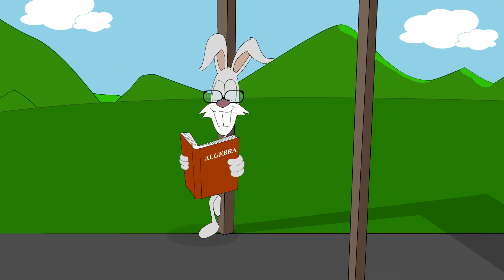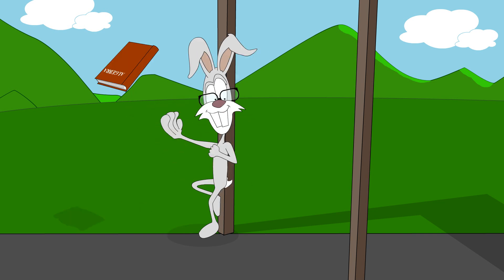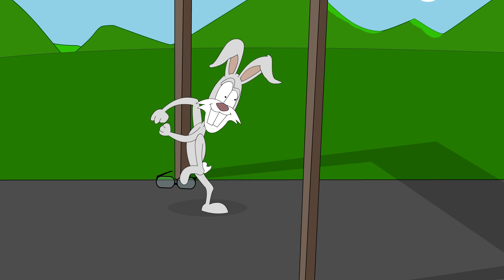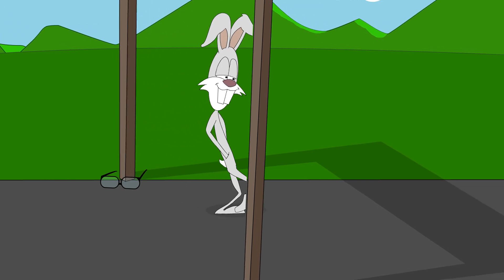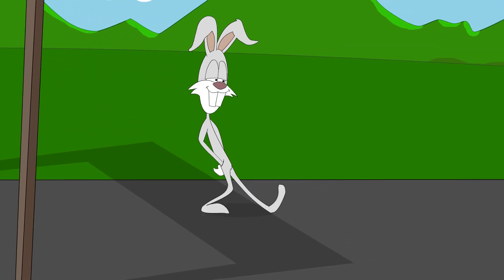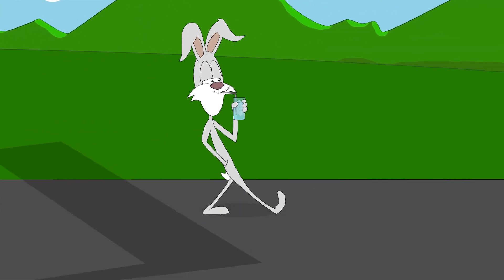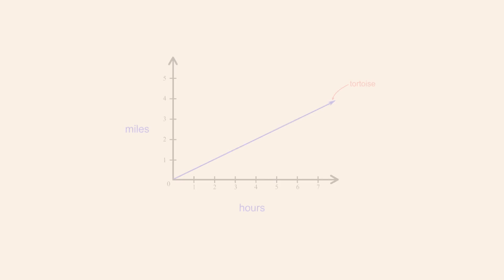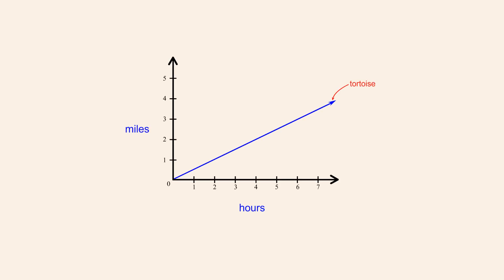Four hours after the race has begun, the hare finally finishes his algebra chapter. Even though the tortoise has obtained a significant head start, the confident hare decides to take it easy, since he knows that even casually strolling at two miles per hour he will eventually pass the tortoise. So four hours after the race has begun, the hare is still zero miles from the starting line.